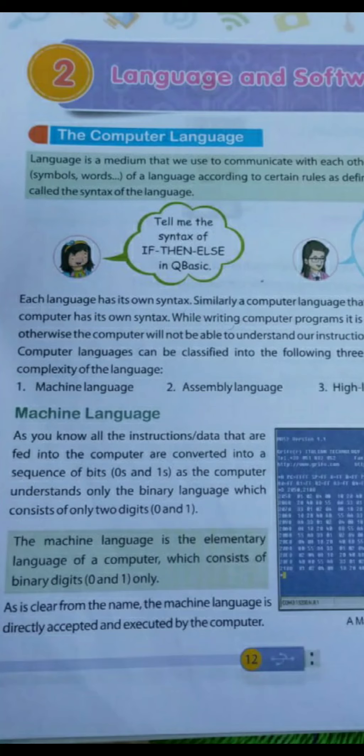Good afternoon students and welcome to your computer class. In our last classes we covered chapter 1, which included the history of computers and how they were developed during different generations. After that we saw types of computers in terms of their capacity and size: microcomputer, minicomputer, mainframe, and supercomputer.